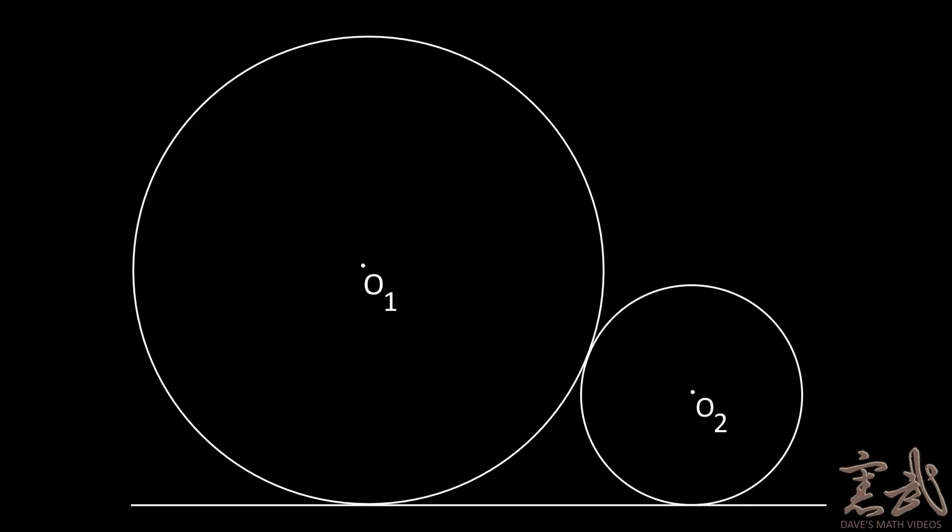So in this case, our simpler problem will be to look at the case where we have only two circles, O1 and O2. And hopefully this will shed some light on what to do when we have more than two circles.